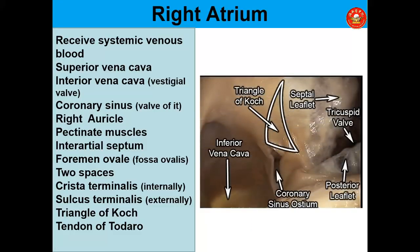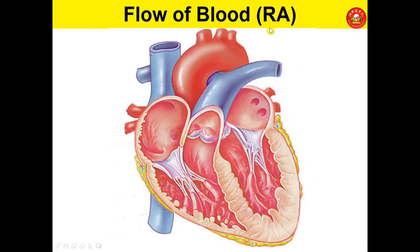The triangle of Koch has boundaries formed by the coronary sinus, the tricuspid valve, and the tendon of Todaro. It is an important clinical landmark for the atrioventricular node. Blood flow to the right atrium comes in through the superior vena cava, inferior vena cava, and coronary sinus as venous blood, then passes through the tricuspid valve to the right ventricle.